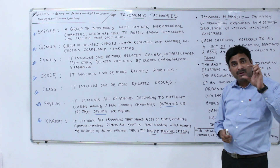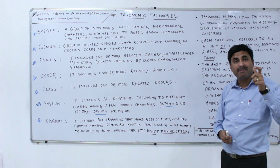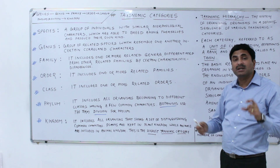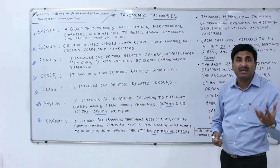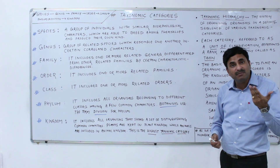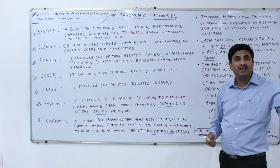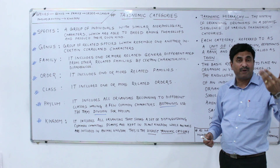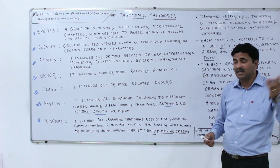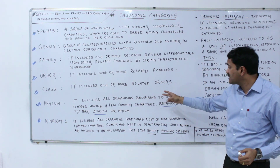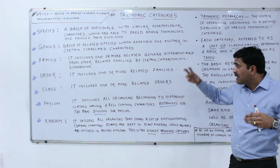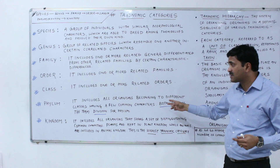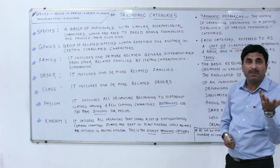The next category is phylum. The term 'phylum' is not used by botanists — instead, botanists use the term 'division.' So when talking about plant classification, we use the term 'division' rather than 'phylum.' When studying the animal kingdom, we use 'phylum' — for example, Porifera phylum. A phylum includes all organisms belonging to different classes, having a few common characteristics.